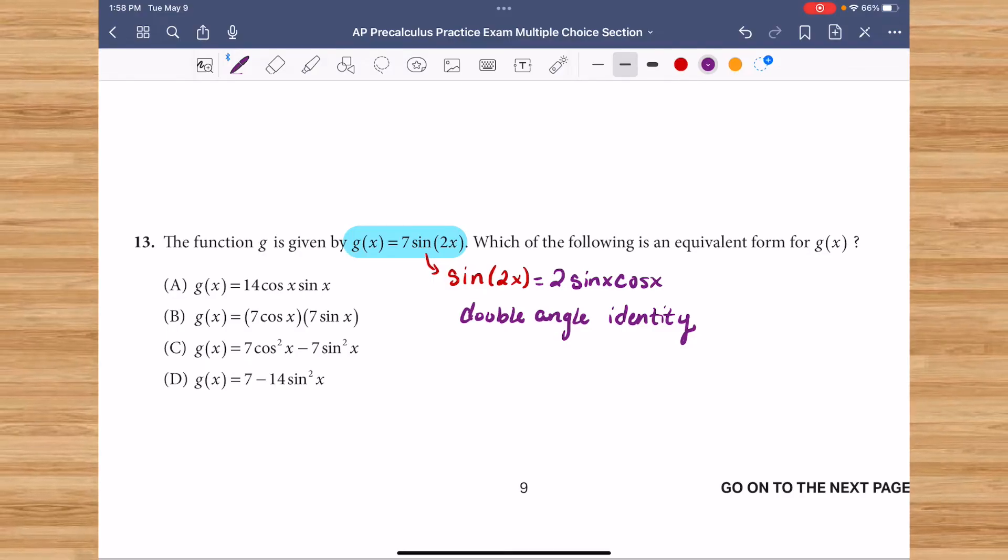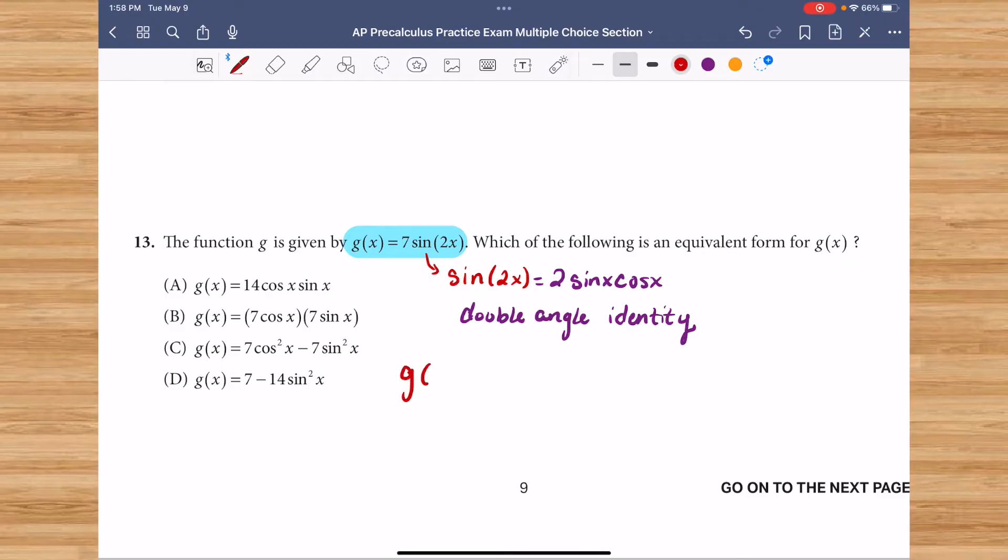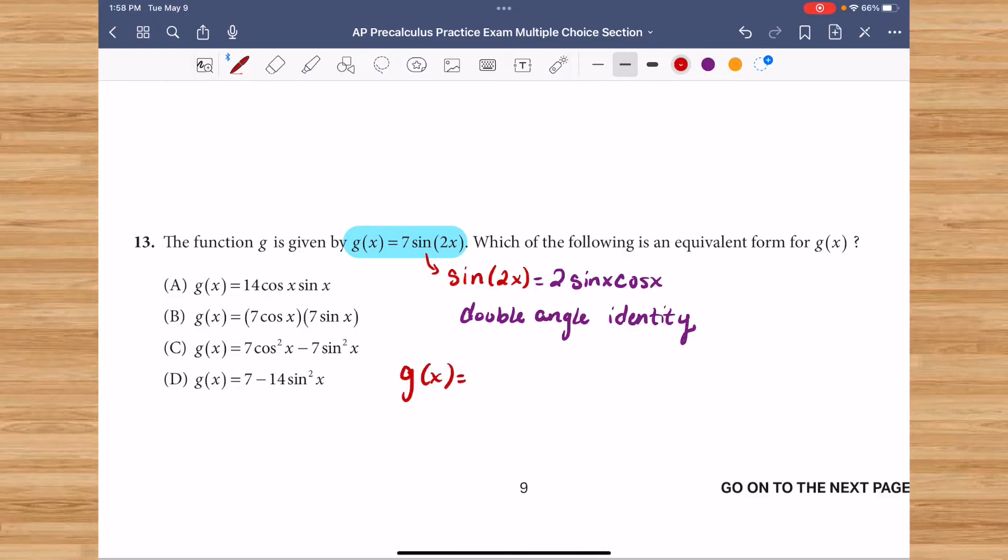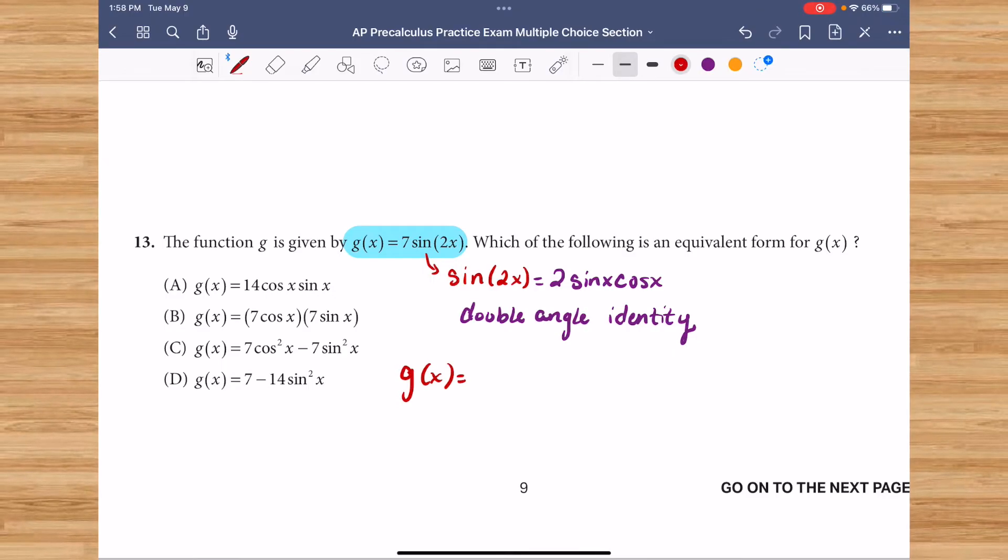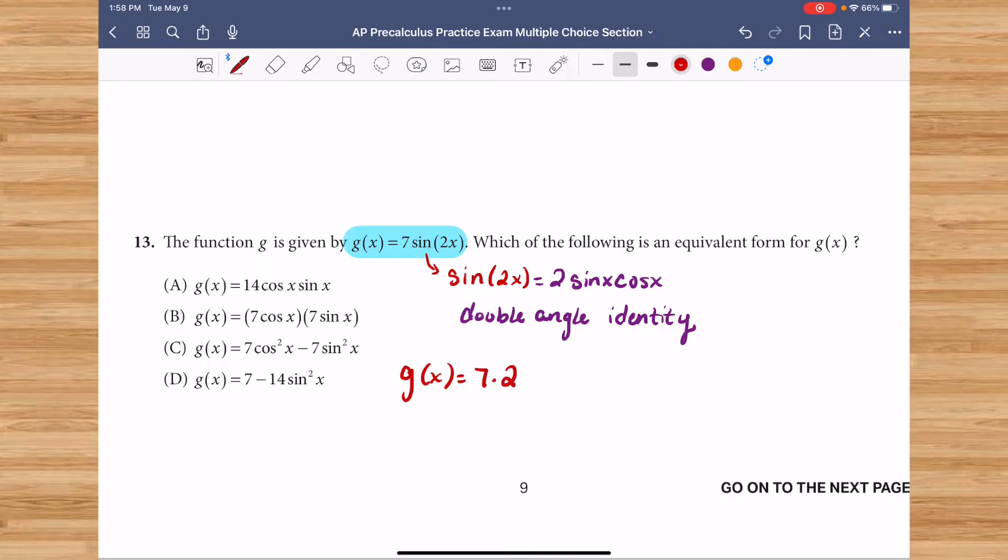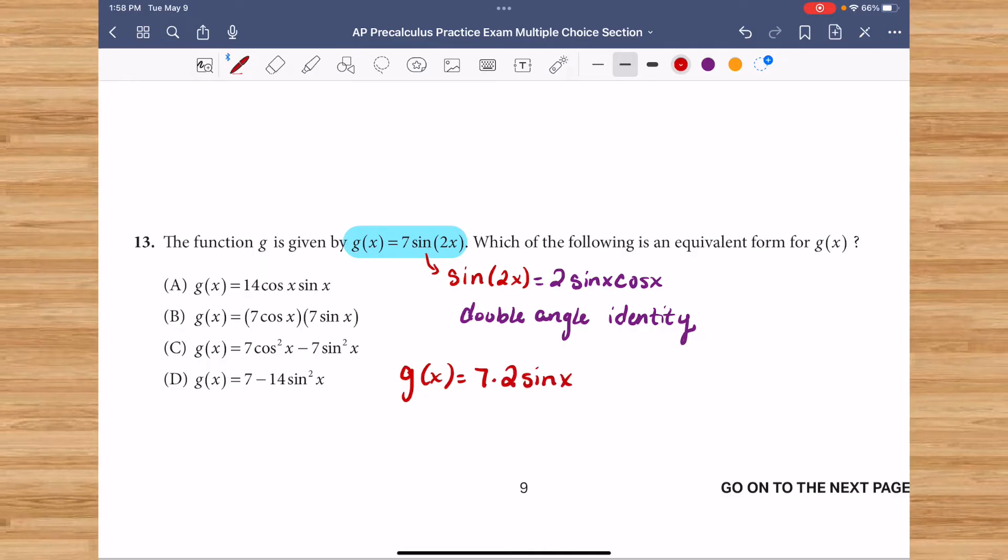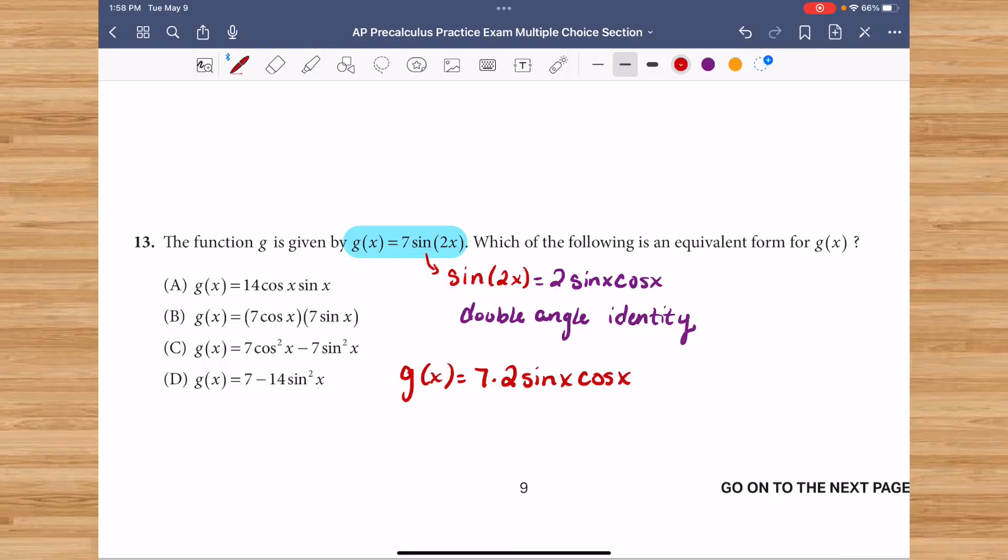So to rewrite g of x, this is going to be 7 times that, or 7 times 2 times sine of x cosine of x.